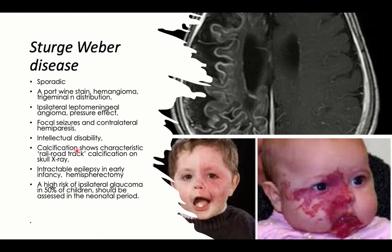Calcification of this angioma in the brain has a characteristic finding on skull X-ray and brain imaging called the rail road track or tram line appearance, due to calcification of the edges of the angioma. It is commonly associated with intractable epilepsy in early infancy, and in cases of intractable epilepsy, hemispherectomy is done for cure.